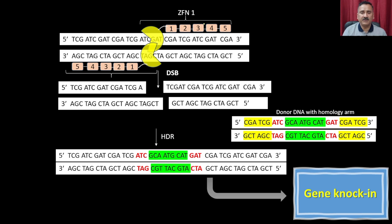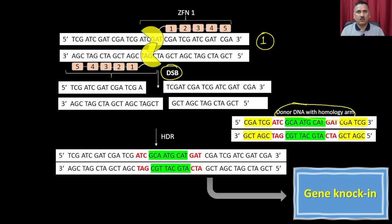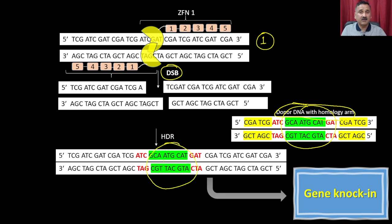In summary, the zinc finger nuclease causes the double-strand break, after which a donor DNA with homologous arms is introduced. This donor DNA undergoes homologous recombination and is inserted into the genome — resulting in gene knock-ins, meaning a new gene has been introduced into the organism's genome.